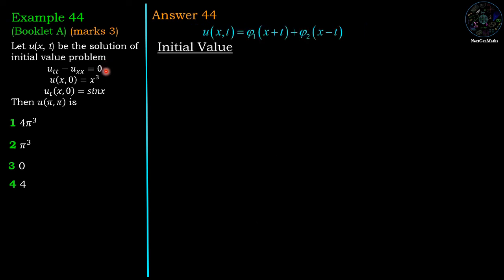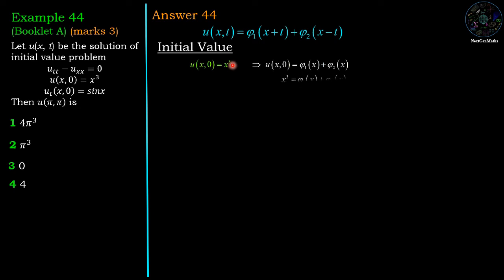Now applying the first initial condition: u(x,0) equals x³. Evaluating u(x,t) at t equals 0, we get u(x,0) equals φ₁(x) plus φ₂(x), since t equals 0. Therefore we have the first equation: x³ equals φ₁(x) plus φ₂(x).